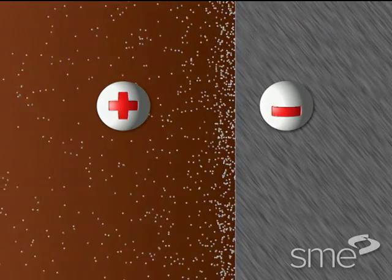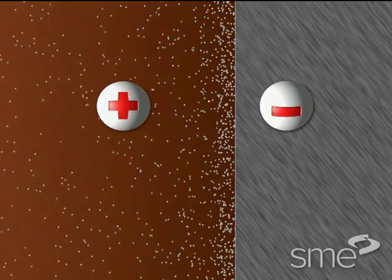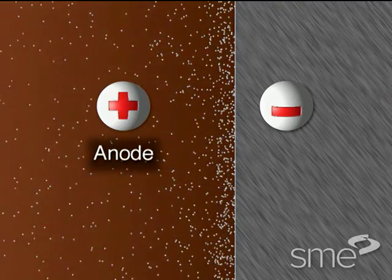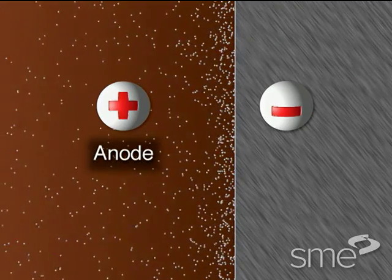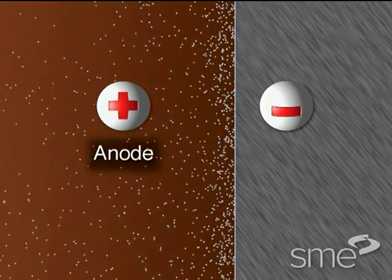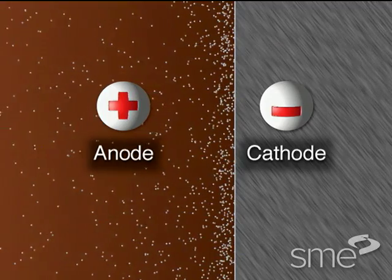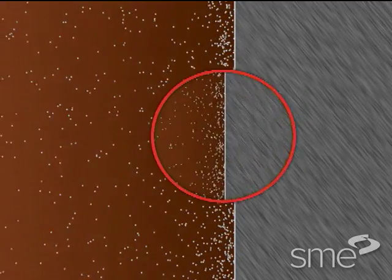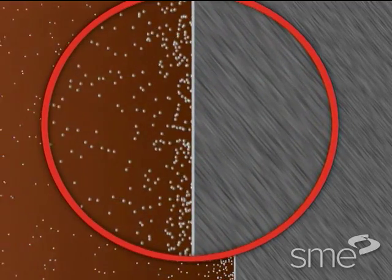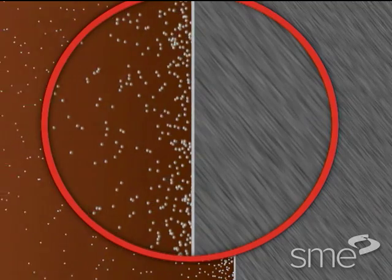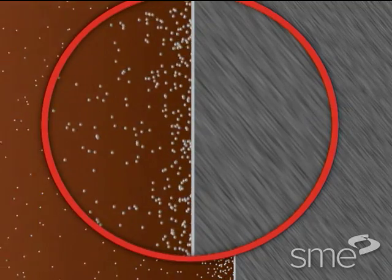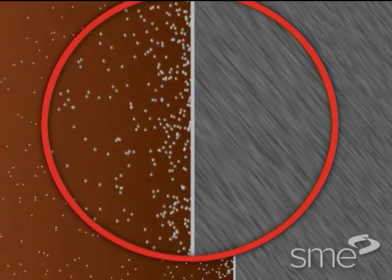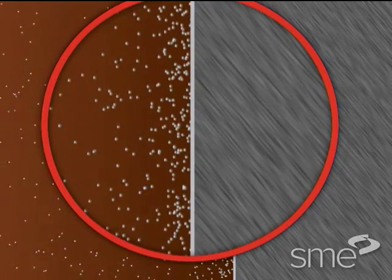The positively charged plating metal is referred to as the anode, and the negatively charged part or parts the cathode. As the electric current flows, the metal ions gain electrons at the part surface and transform into a coating of metal.